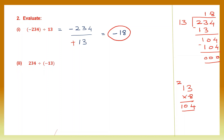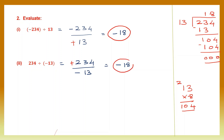Next: 234 divided by minus 13. 234 doesn't have a sign so we give it the plus sign — signs are different, so our answer is negative. We've already done the division of 234 by 13 and got quotient 18. So our answer here is also 18 with the sign — final answer is minus 18.